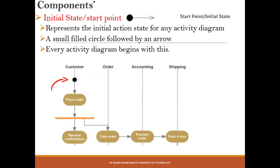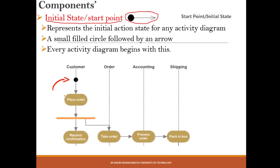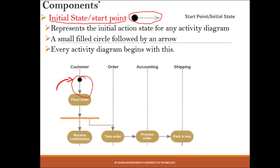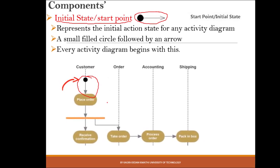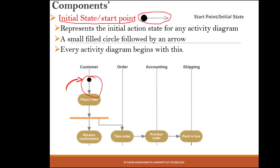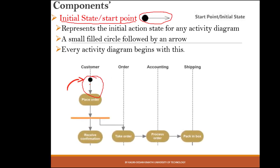The first component is the initial state, also called the start point. It is represented by a small filled circle followed by an arrow. This symbol represents where the activity diagram begins. For example, when a customer is placing an order, the initial state symbol marks where the activity starts.